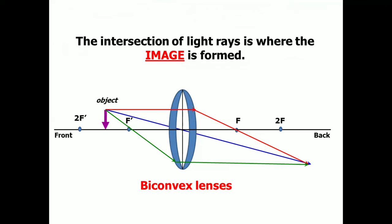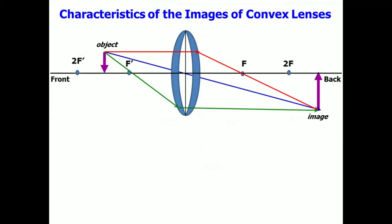You have to take note that the intersection of light rays is where the image is formed. And it is somewhere here. And the image looks like this. Having this ray diagram, let us now discuss the characteristics of the images that is formed for this case.